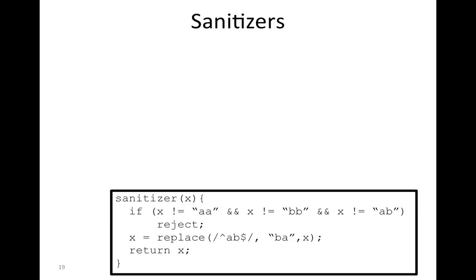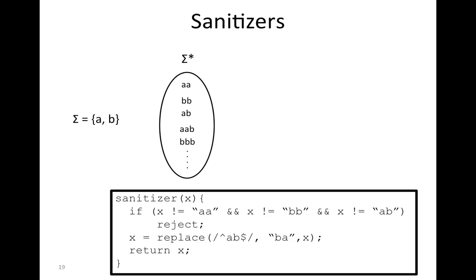Let's see what we mean by this. We're going to illustrate this on a simple example. This example uses only the alphabet A and B — we wanted to simplify the example, so we are just sticking to this alphabet. Since this is a function, it has a domain and a co-domain. The domain of the function is sigma-star, which means all strings you can generate from sigma, like A, B, AB, and so on. It's an infinite set, but each string in this set is a finite string — this is very important.